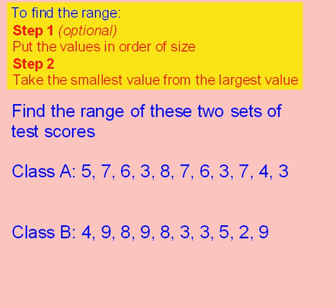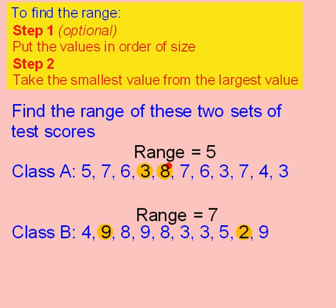Here are two questions for you to try. Find the range of class A and the range of class B. Press pause and have a go. When you're ready, press play. In class A, the biggest value is 8 and the smallest is 3. 8 take away 3 gives us a range of 5. In class B, the biggest value is 9 and the smallest is 2. 9 take away 2 gives us a range of 7.